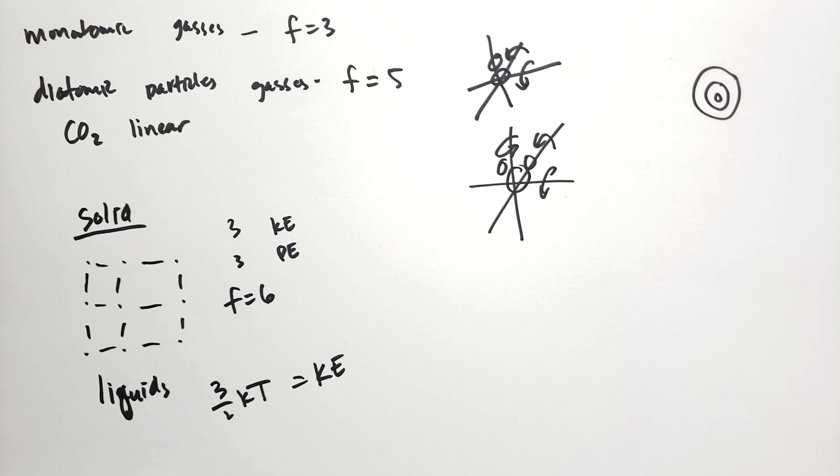Problem 1.24, calculate the total thermal energy in a gram of lead at room temperature, assuming that none of the degrees of freedom are frozen out. So you just use f equals 6 for that. It's pretty easy to calculate.